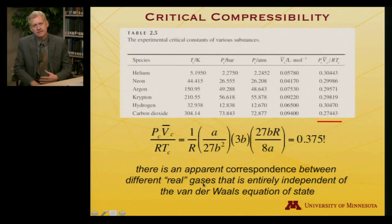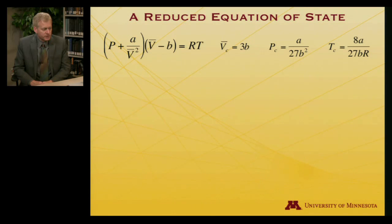So let me actually define then a reduced equation of state, a so-called reduced equation of state. So this is just the van der Waals equation of state, again showing what we derived the relationship to be between van der Waals parameters and critical parameters. So if now I rewrite the van der Waals equation of state, changing its variables.